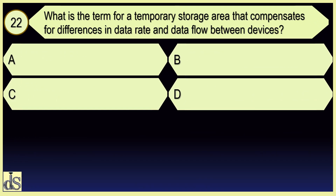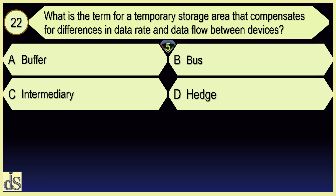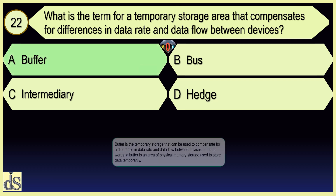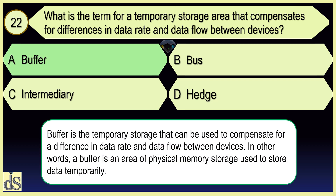What is the term for a temporary storage area that compensates for differences in data rate and data flow between devices? Buffer.